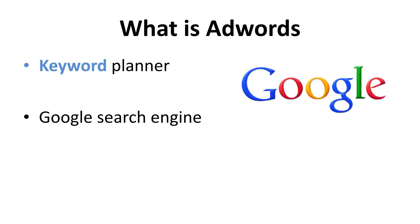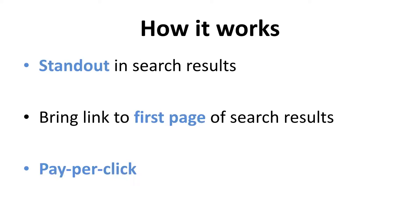However, the placement of the site — whether it's on the top, bottom, or side — will be determined by Google based on the relevance of the search request. Google AdWords provides you a ranking in the search results based on the relevance of your site to a particular keyword, hence increasing the exposure of your site to a targeted group.